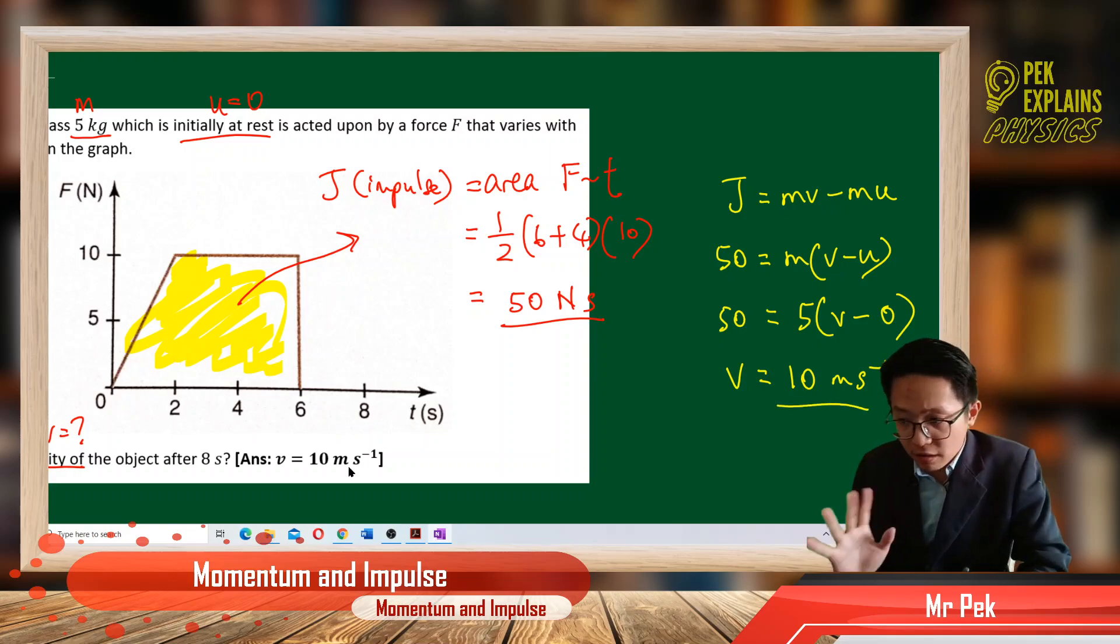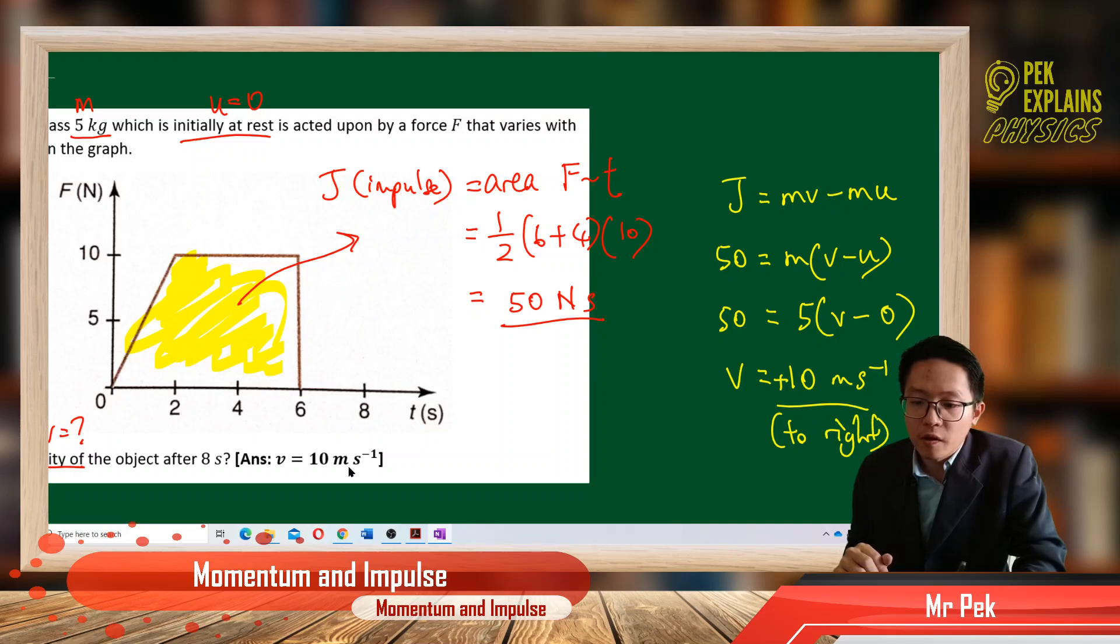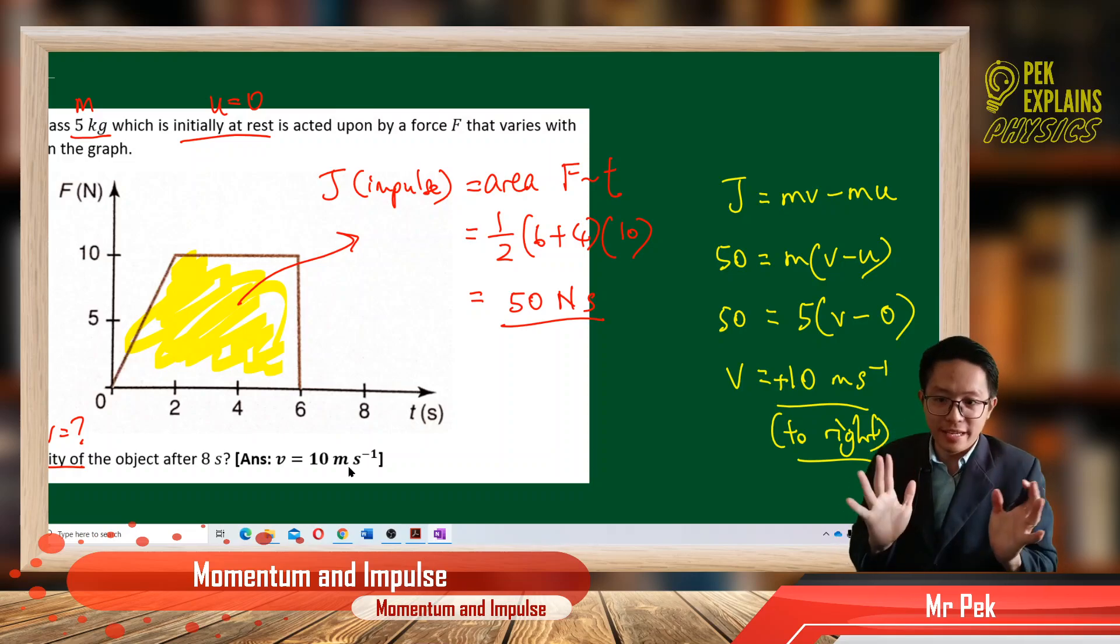And velocity is a vector. You must give direction also. So since this is a positive value, it means it's to the right. You must give direction. For vectors, you must give magnitude and direction, both. That's our answer.